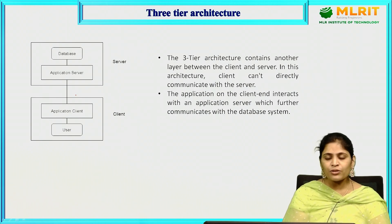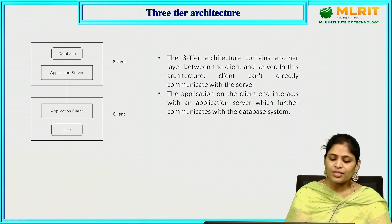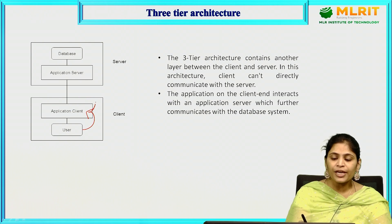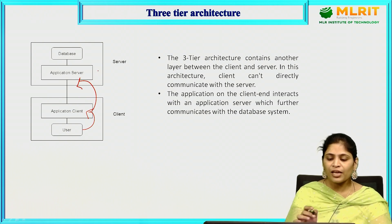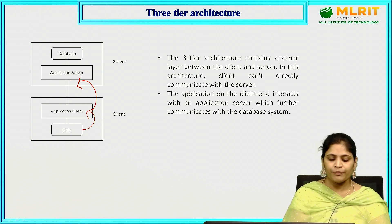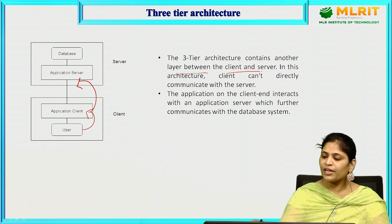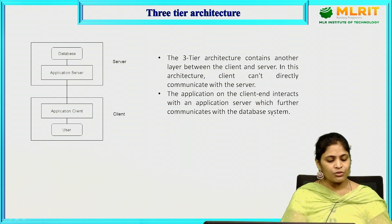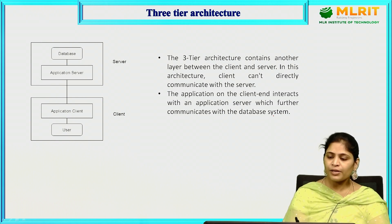In three tier architecture, one more level is added to ensure security. The client application will not directly communicate with the database server; instead, it communicates with the application server, and later the data is retrieved from the database. There is no direct communication to the database, providing more security. The three tier architecture contains an additional layer — the application server — between client and server. Nowadays, database management systems are built using this three tier architecture.